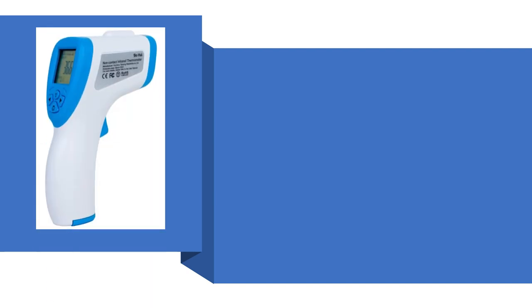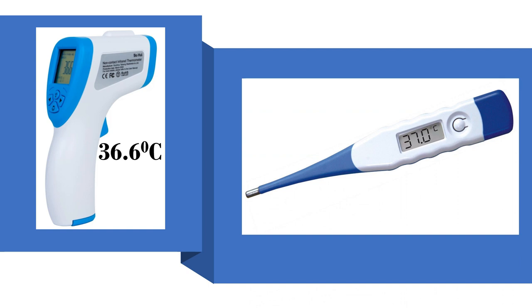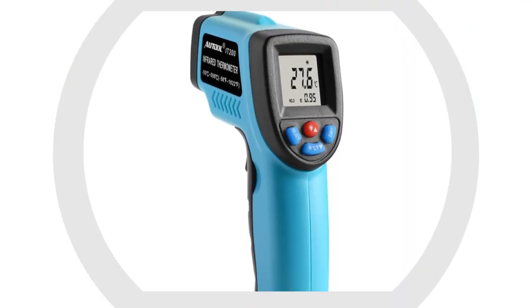Another example of a digital thermometer. The temperature reading in this thermometer is 36.6 degrees Celsius. In this thermometer, the temperature is 37 degrees Celsius. Another example: the temperature in this thermometer is 27.6 degrees Celsius.